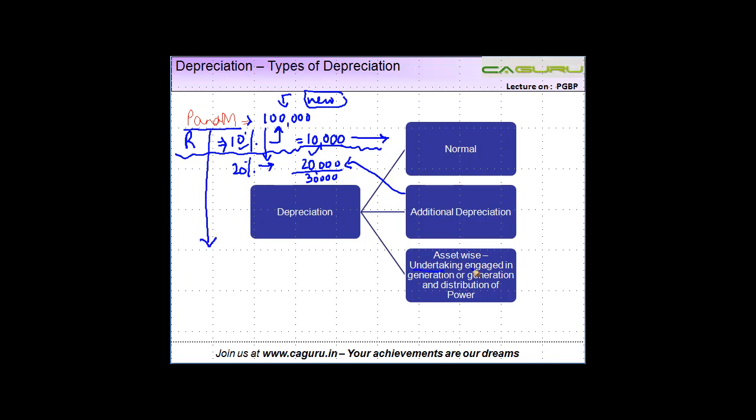in case of undertaking engaged in the generation or generation and distribution of power, you have an option to claim asset wise depreciation. So this is the third category of types of depreciation.